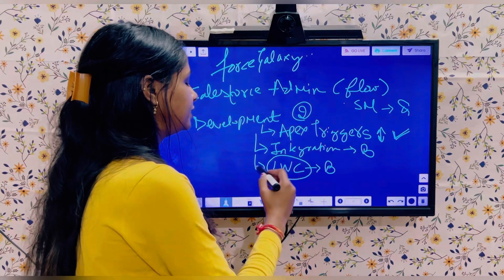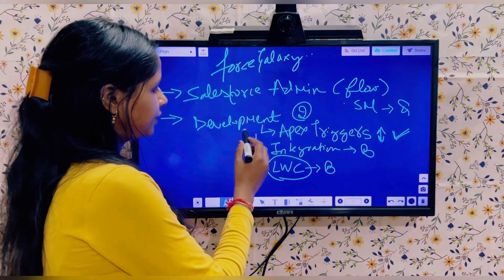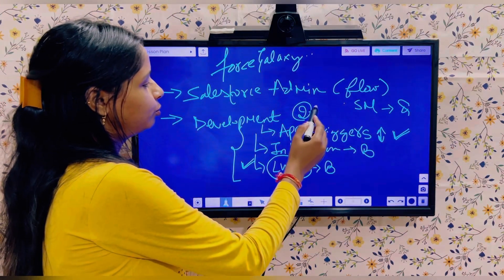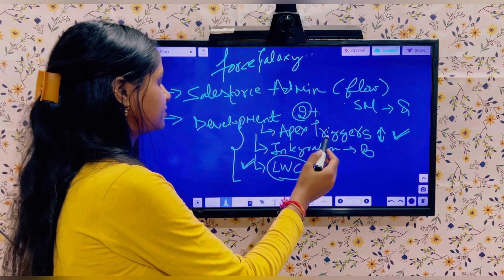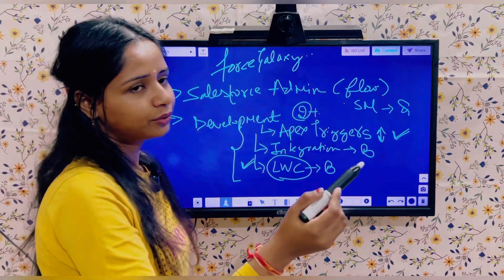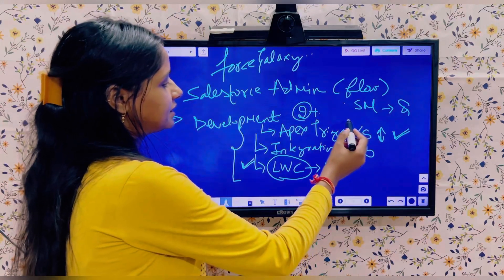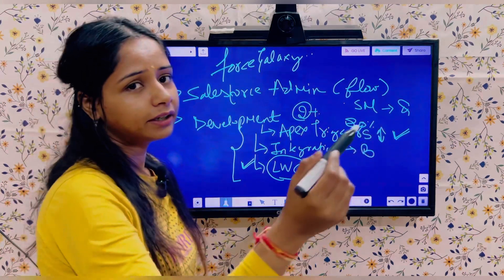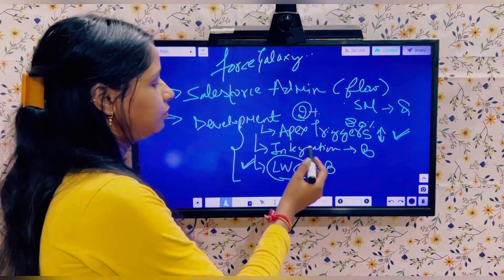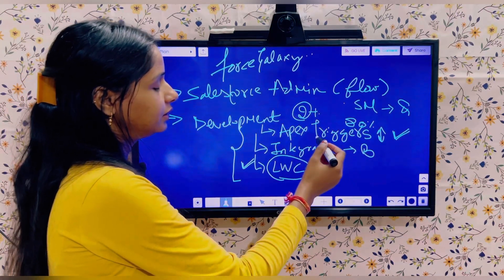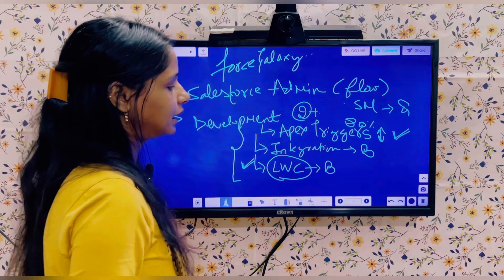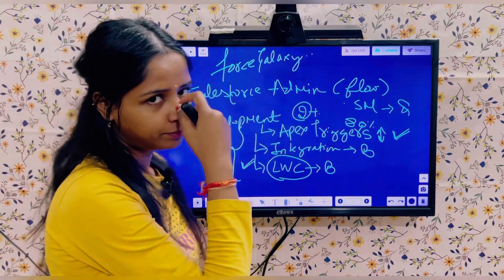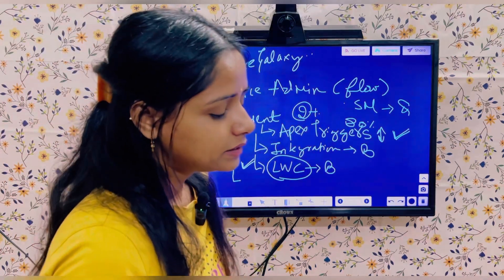So these are the three important topics for a two-plus year experienced person: Apex Trigger is the most critical, as it decides 80% of your hiring chances. If you've written your code well, your chances of getting hired are very good. Next, how well you've explained the Admin part and scenarios also matters significantly.